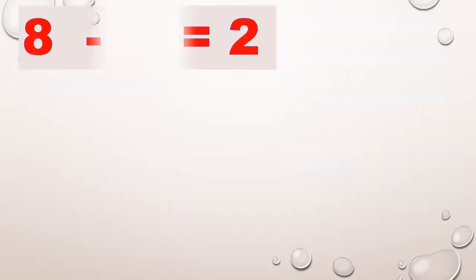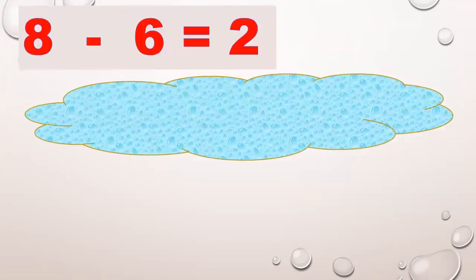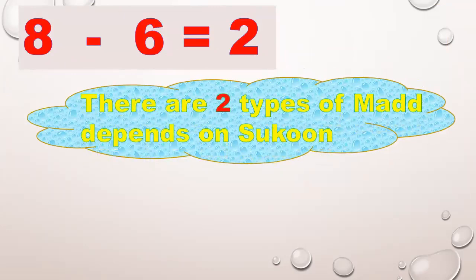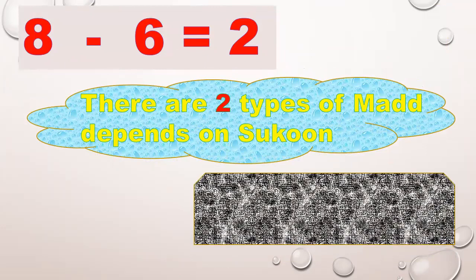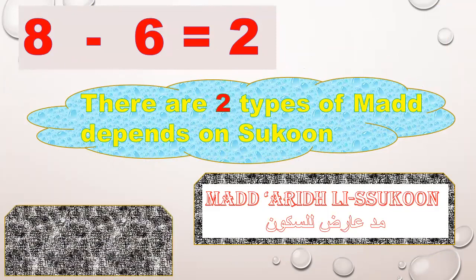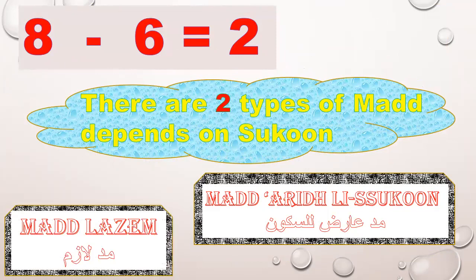Today, insha'Allah, we will complete the types of mad. There are eight types. Eight minus six — six types we studied together — equals two. Insha'Allah, we will study together two types of mad. There are two types of mad dependent on sukoon: Madd al-Arid l-Sukun and Madd al-Lazim.